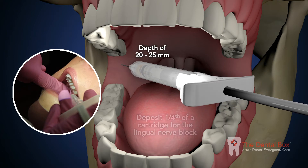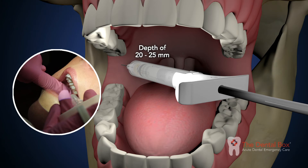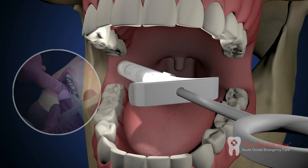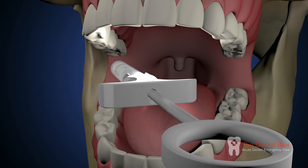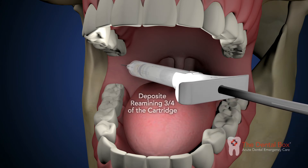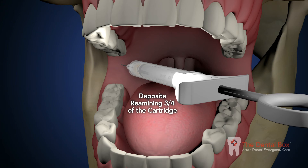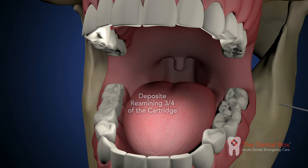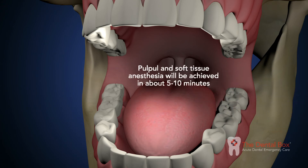Continue advancing the needle to a depth of 20 to 25 millimeters, which is approximately three-quarters of the length of the long dental needle. If bone is contacted before this depth, move the syringe towards the front of the mouth and continue to insert until the depth is achieved. Aspirate the syringe; if negative, deposit the remaining three-quarters of the cartridge. Withdraw the syringe and cap the needle. Pulpal and soft tissue anesthesia will be achieved in about five to ten minutes.